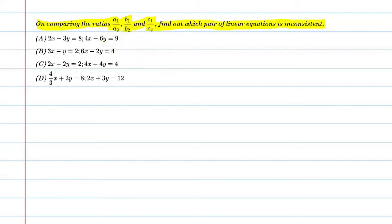So let's start with option A. Option A has two equations. You can say 2x minus 3y minus 8 equal to 0.